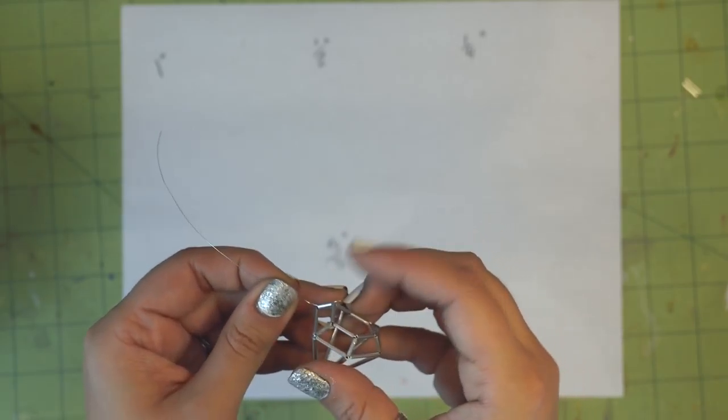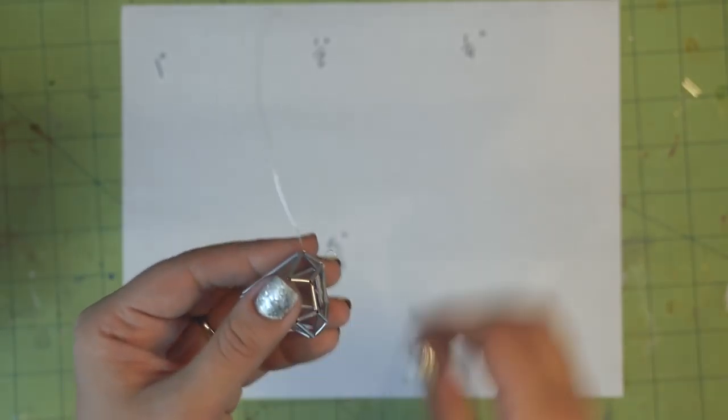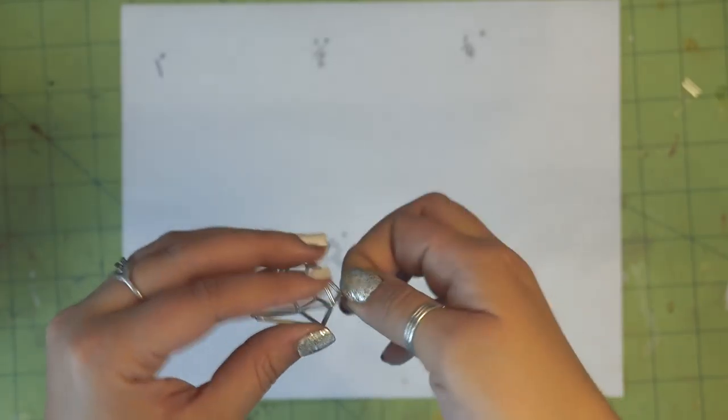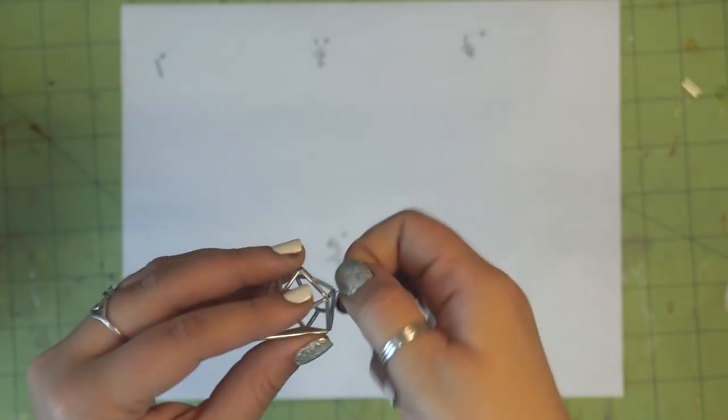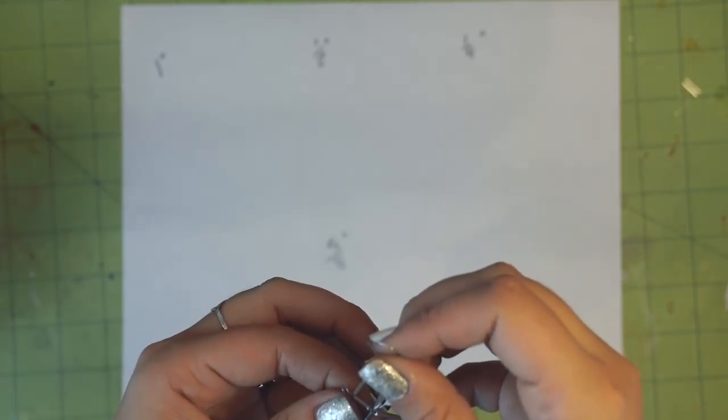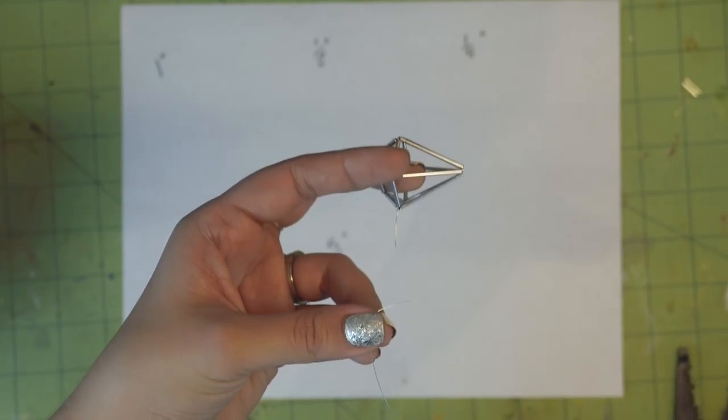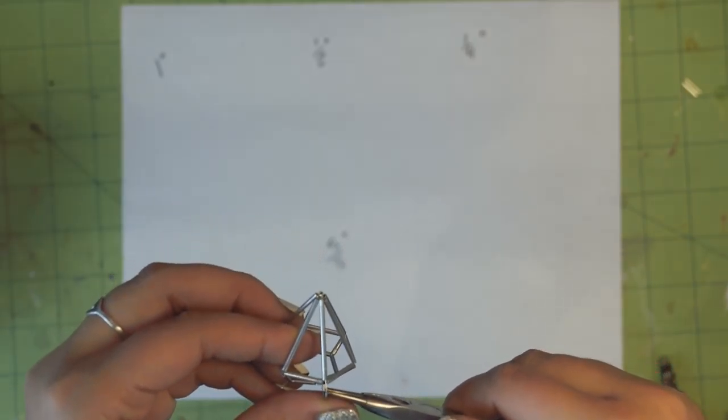Or, if you want to make a loop for a jump ring or something, you could thread the wire through one of the tubes, leaving a little bit of extra wire. Twist that wire a few times and you'll have a little part to attach a jump ring. Thread the wire through one of the tubes, really it doesn't matter which, and then cut the wire short and thread it back through another tube to secure that end.